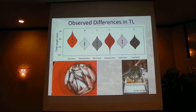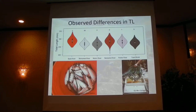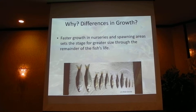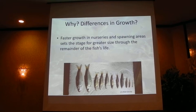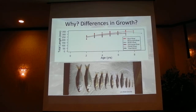Size differences in these populations are really important in terms of biology and ultimately for management. Larger fish produce more eggs, have higher fitness, and contribute more biomass to the total population. It's really important for managers to understand why these size differences are occurring. For the scope of this project, we were looking to determine at what points in life history these size differences are occurring. Our working hypothesis was that faster growth in nurseries and spawning areas, including estuaries, is setting the stage for greater size throughout the remainder of the fish's life.